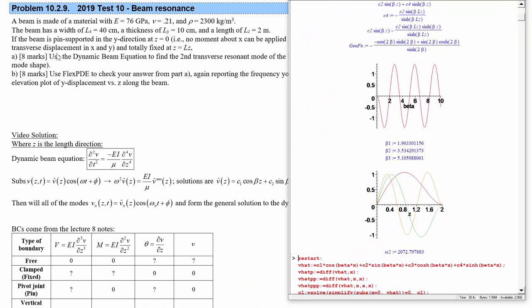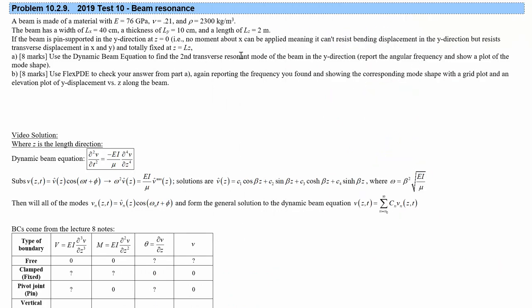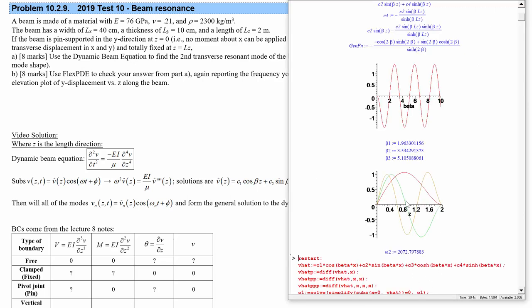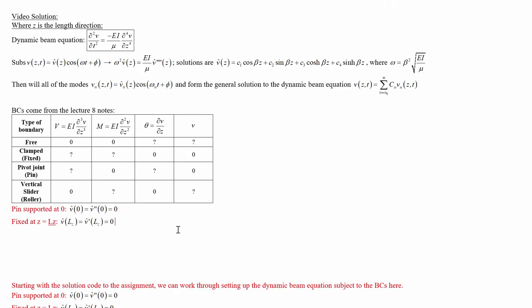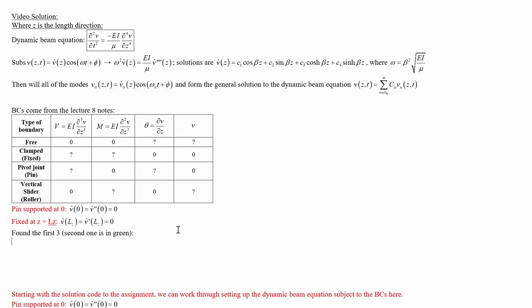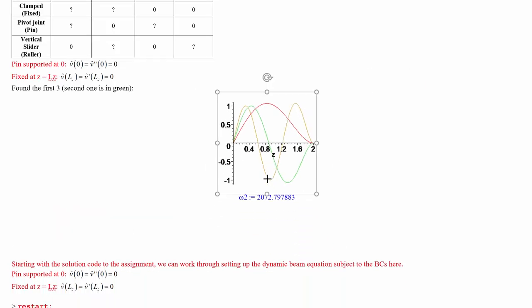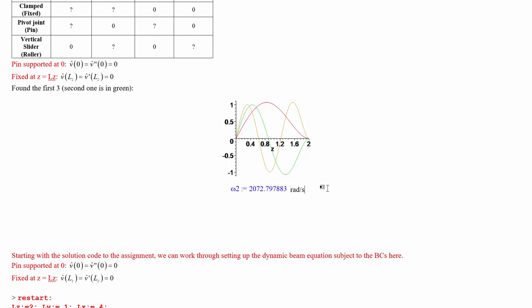The second resonant frequency comes out to approximately 2073 rad/s. We were asked to find the second transverse resonant mode in the Y direction, report the angular frequency, and plot the mode shape — and we did that. We actually found the first three mode shapes; the second one is shown in green. The resonant frequency for the second mode is 2073 rad/s.